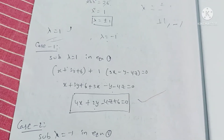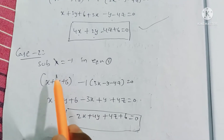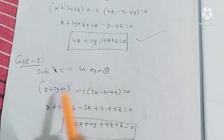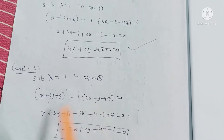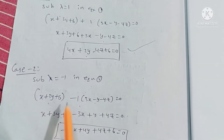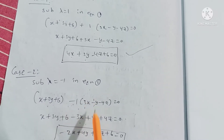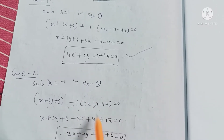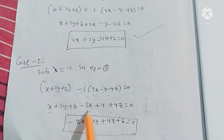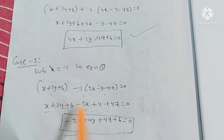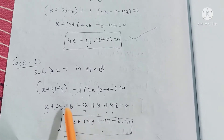Case 2: lambda equals minus 1. Substituting in equation 1: x plus 3y plus 6 minus 1 into (3x minus y minus 4z) equals 0. Therefore x minus 3x gives minus 2x, 3y plus y gives 4y, plus 4z, plus 6 equals 0.